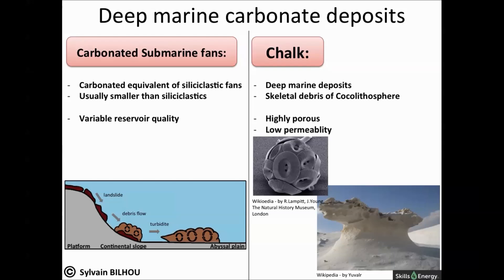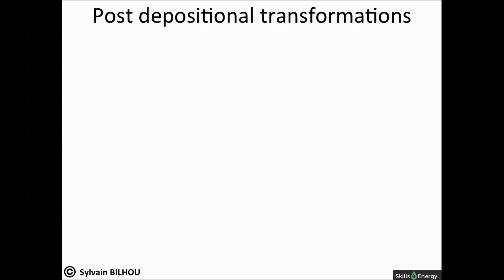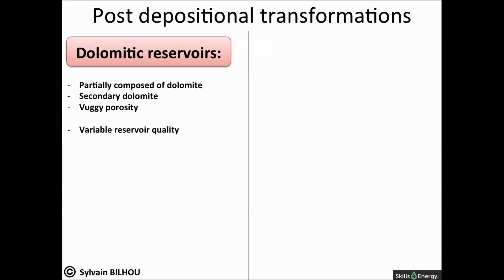The description of the depositional settings of carbonate reservoirs has been done. However, the discussion about carbonate reservoirs is incomplete. Post-deposition transformation can lead to the creation of reservoirs where once there was tight carbonate rock. Dolomitic reservoirs are carbonate rocks composed of at least 50% dolomite. Prospective dolomites are secondary dolomites, meaning they have been generated by the replacement of calcite by dolomite during a post-depositional process. They have porosity ranges from 8 to 23% and permeability up to 2 darcies.